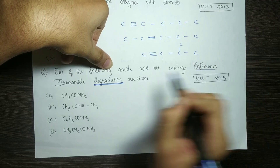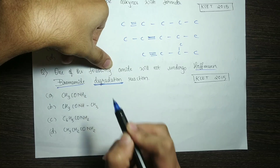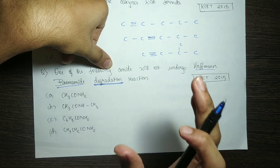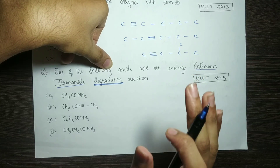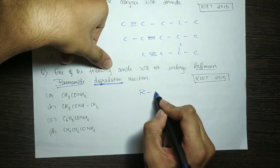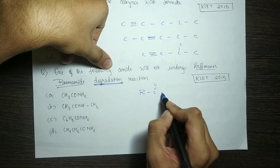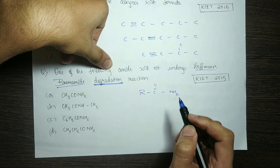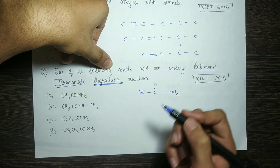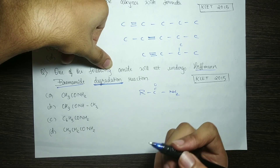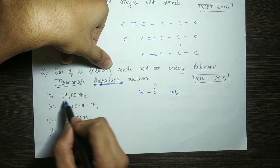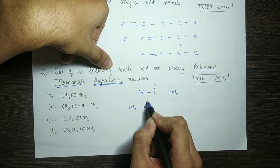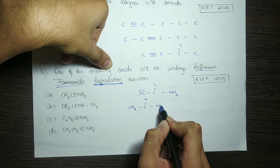In this reaction, primary amides have the form R-CO-NH2. Primary amide: CH3-C(=O)-NH2. That is primary.